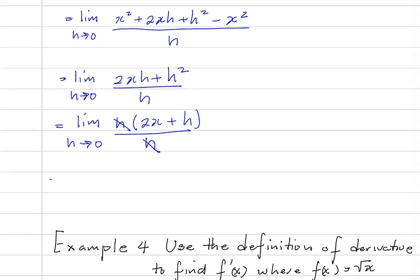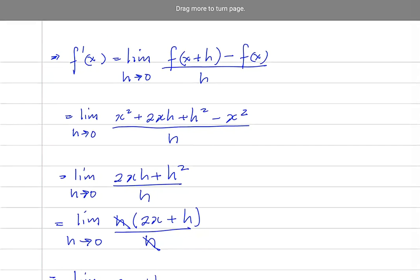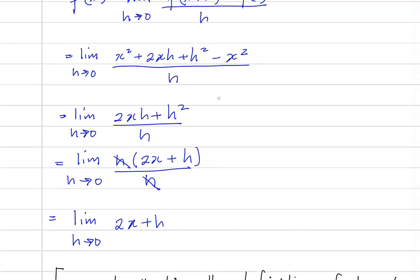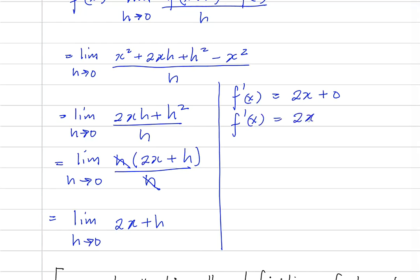So this would be equal to the limit as h approaches 0 of 2x plus h. So therefore, by direct substitution, f prime of x would be equal to 2x plus 0. So if f of x is equal to x squared, f prime of x would be equal to 2x.